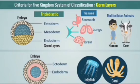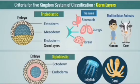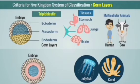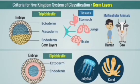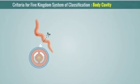Some lower organisms have only two layers — ectoderm as the outer layer and endoderm as the inner layer — and do not contain a mesodermal layer. So these are called diploblastic animals. 'Diplo' means two and 'plastic' means layer. An example of a diploblastic animal is jellyfish.